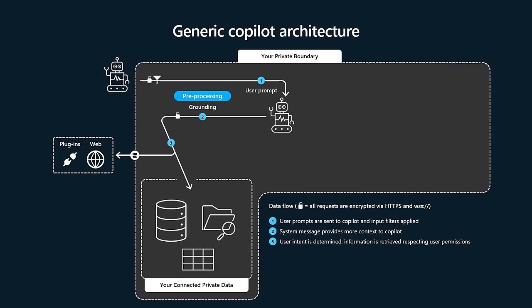That's your first step — giving it the system message to say: you're a Copilot, you need to abide by these different rules, cite your sources, be nice, be friendly, don't be mean — all those types of things you might put in that system message. Then you need to wire in your data, assuming not all the data is in the large language model training set. For GPT-4, the training cutoff might be a few months back; for GPT-3.5, it might go as far back as September 2021.